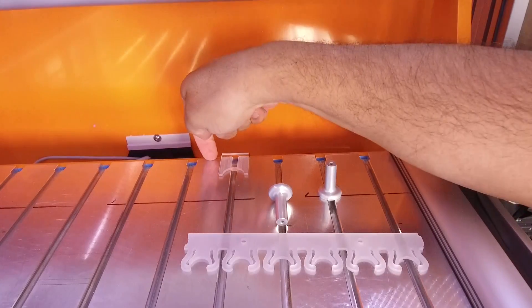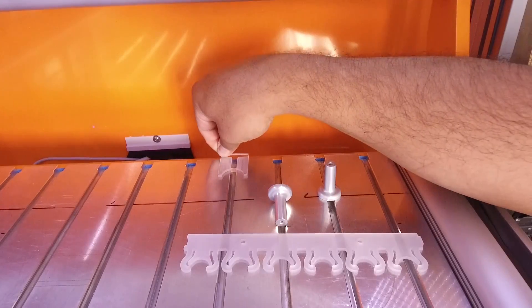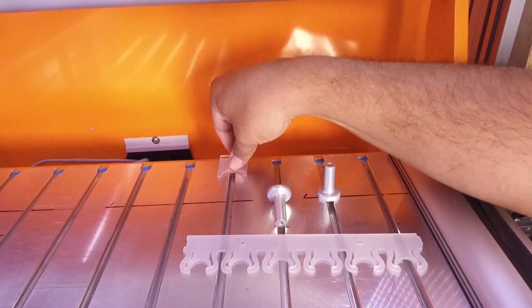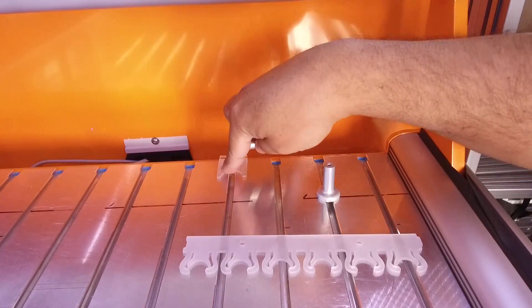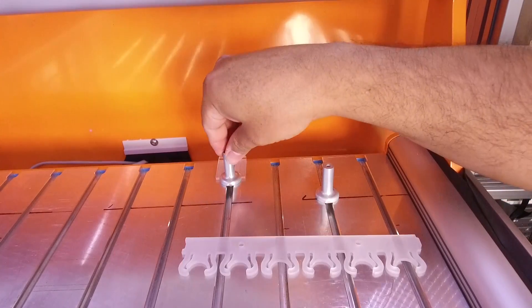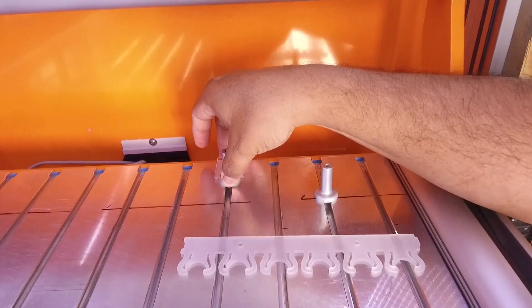This lip here on the tool aligns with the back of the aluminum plate, so every time it's the same position. Now you put this here, tighten it, and it's precisely in the same position over and over.